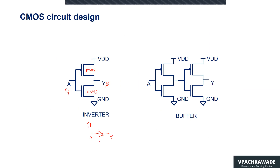We show a small bubble in the inverter symbol. The PMOS acts as a pull-up network and NMOS acts as a pull-down network. When the input is at logic 0, the NMOS will be switched off, PMOS will be switched on, and the output will be pulled up to logic high, that is VDD.